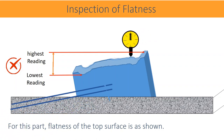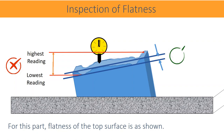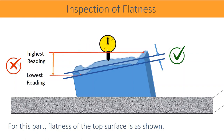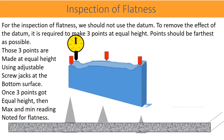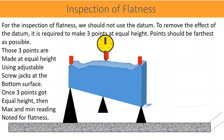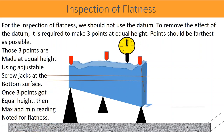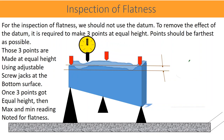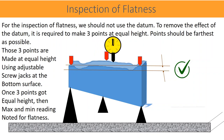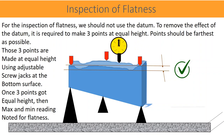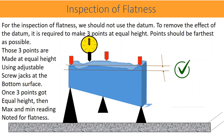The correct flatness of the top surface is shown between two inclined parallel planes. For the inspection of flatness, we should not use the datum. To remove the effect of the datum, it is required to make three points at equal height — points should be as far apart as possible. Those three points are made at equal height using adjustable screw jacks at the bottom surface. Once three points are at equal height, the maximum and minimum readings are noted. Flatness is the difference between the maximum reading and minimum reading. Note that the minimum reading value could be positive or negative depending on the surface.